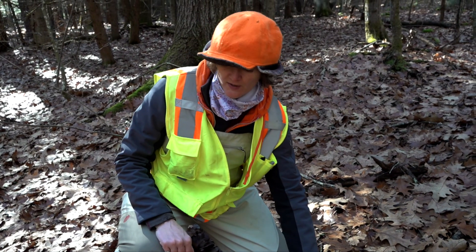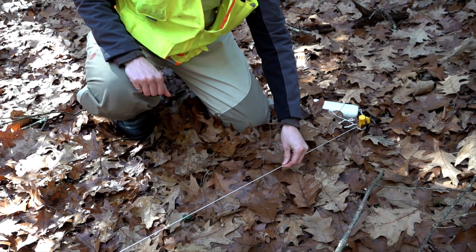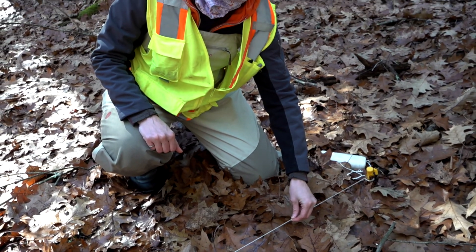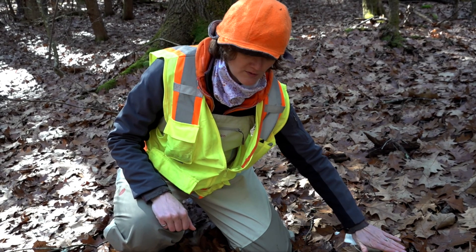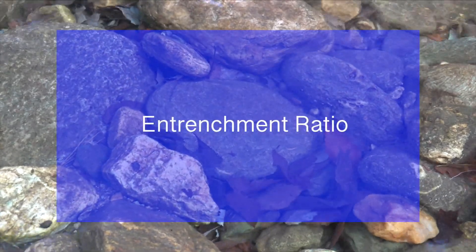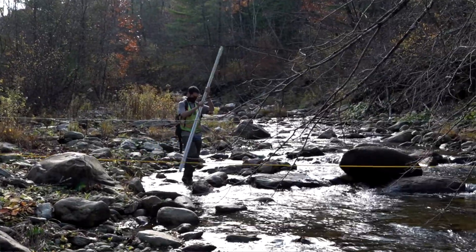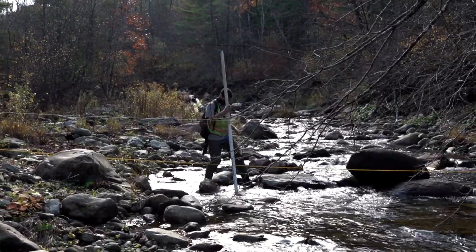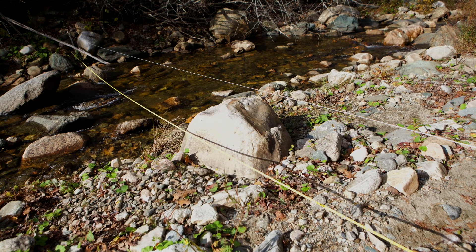Working with a field partner, we ran a string level at the elevation that was two times the max bankful depth, and ran it out level so that this is the location where it meets up with the ground at the edge of the floodplain. The entrenchment ratio is the flood-prone width divided by the bankful channel width — an indicator of how many times the channel can spread out during a flood. In our region, the flood-prone width is approximately representative of the 50-year flood.